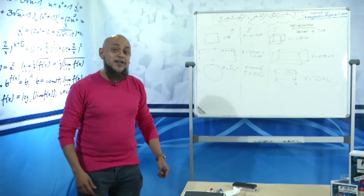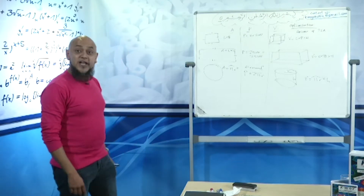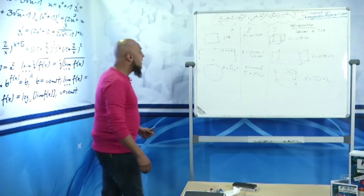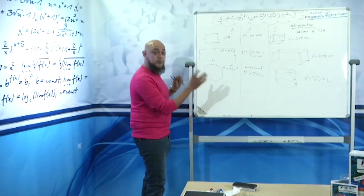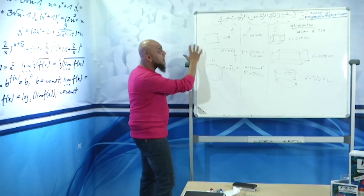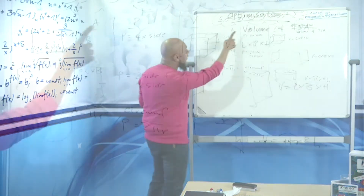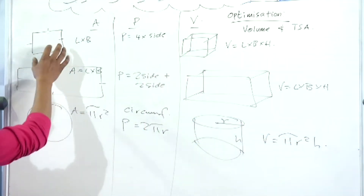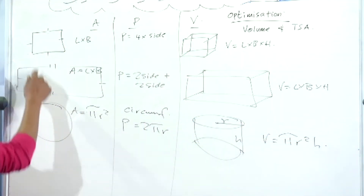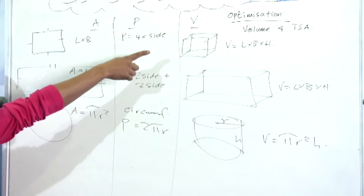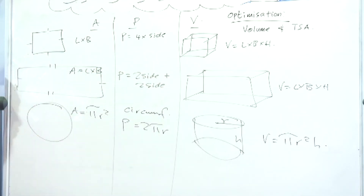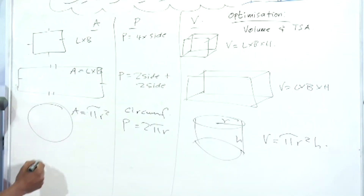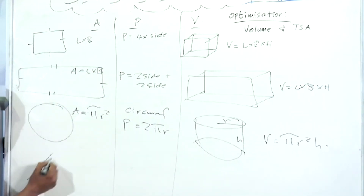Boys and girls, welcome back to the K-Way math show. Before we cut for the break, we did all your formulas on your normal shapes: your square, rectangle, circle — that's your cube, your prism, and your cylinder. We're now going to go on to the last one here.